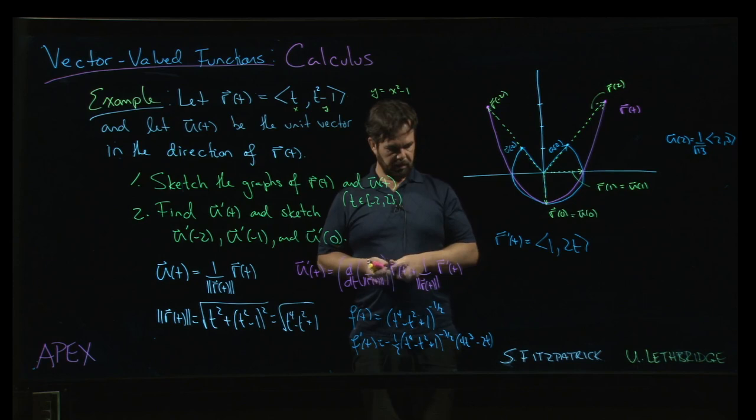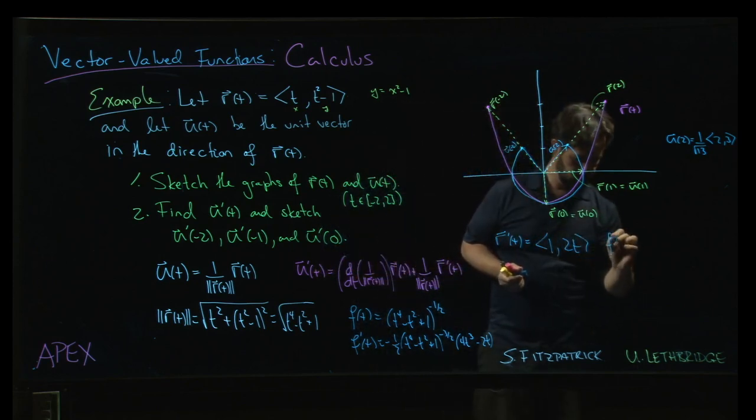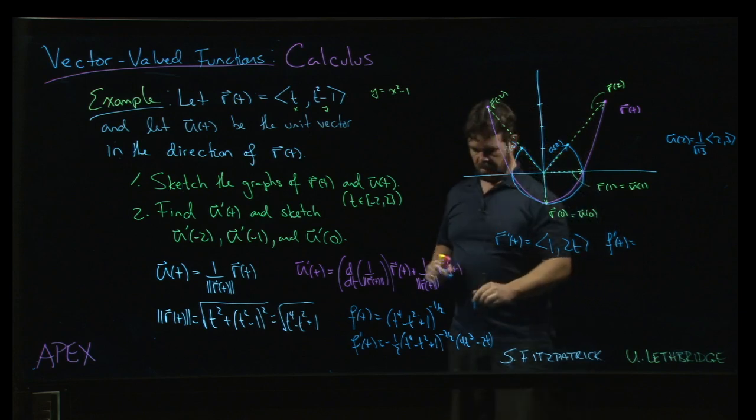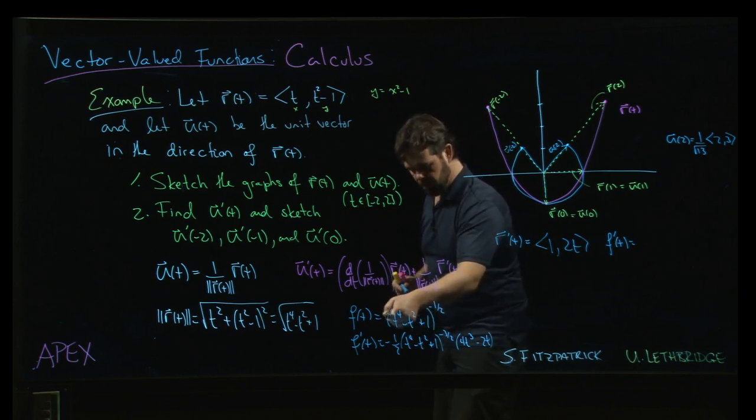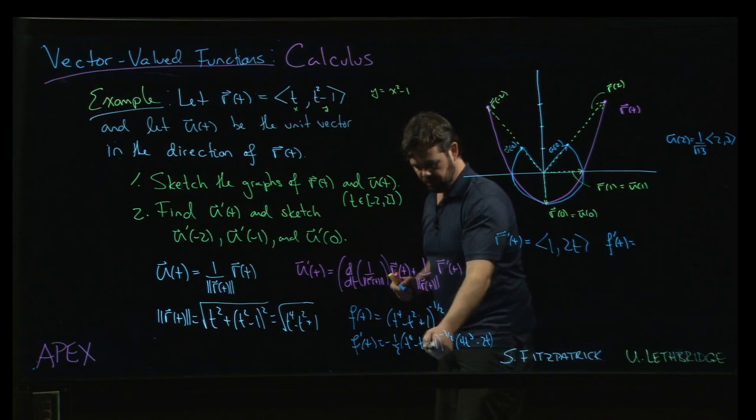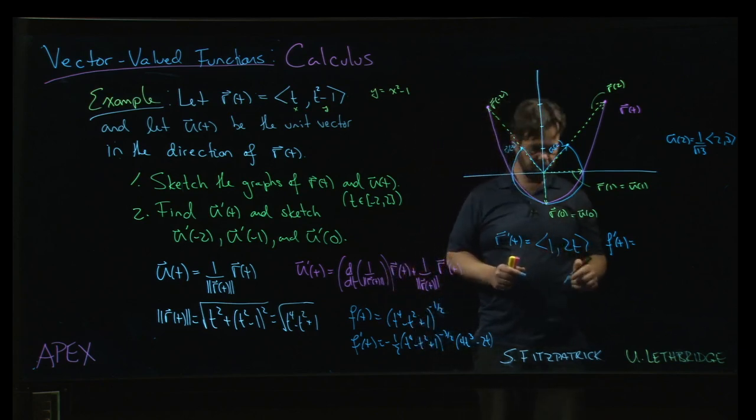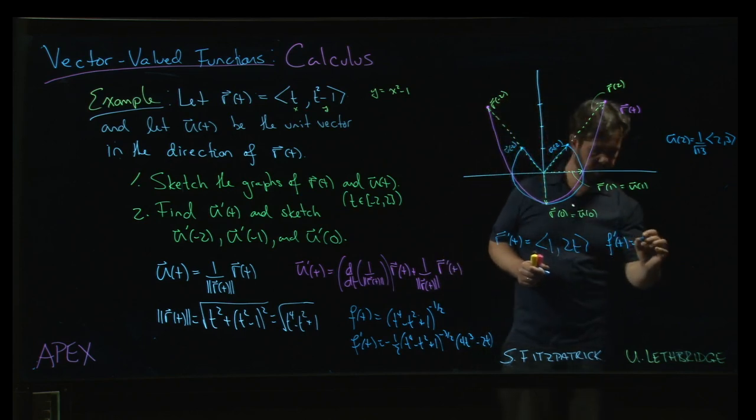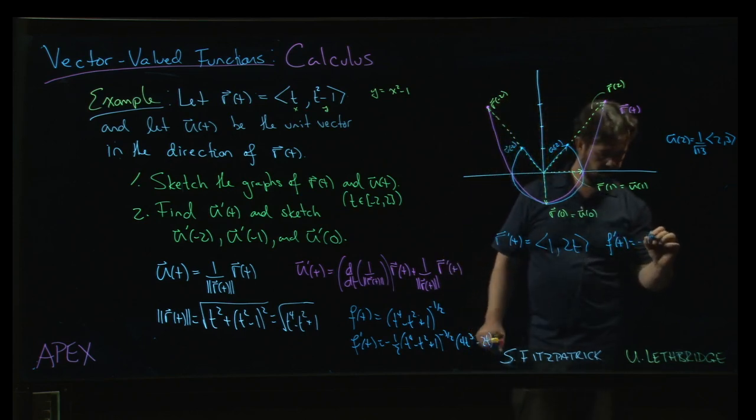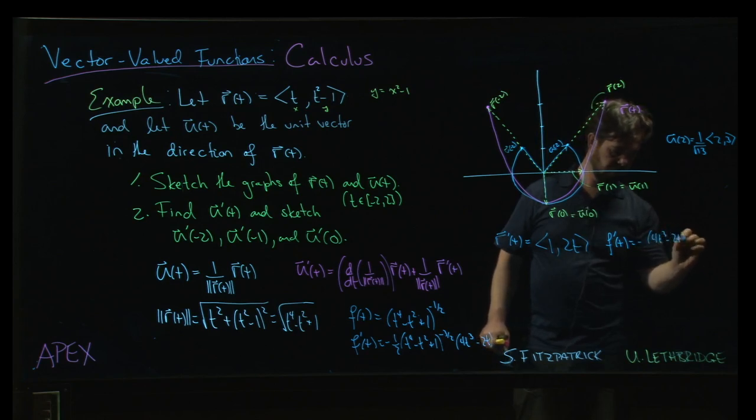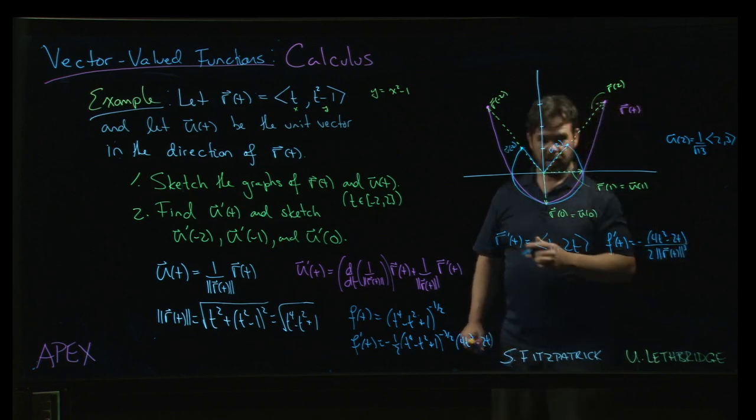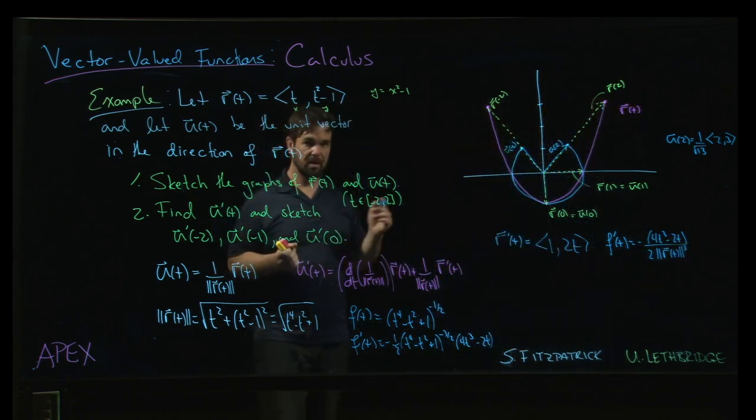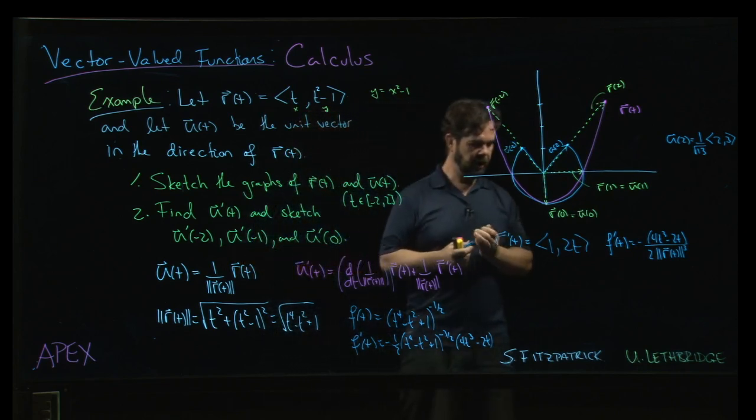Now you can simplify that a little bit. This term here raised to the power of 3 halves, that's the cube of this, and this is just 1 over the magnitude. So this is 1 over the magnitude cubed. So what we have is minus 4t cubed minus 2t on top, over 2 times the magnitude of r of t cubed. We could plug in what that is if we want, but for now we could put it like that to save ourselves some writing.